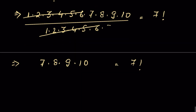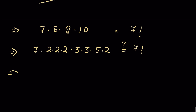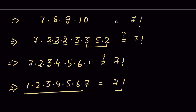Can 7 times 8 times 9 times 10 equal 7 factorial? Let's break it down: 8 as 2 times 2 times 2, 9 as 3 times 3, and 10 as 5 times 2. Regrouping: we get 4 from 2 times 2, then 2 times 4 gives us factors, 2 times 3 gives 6, and we have a 3, a 5, and a 7. Arranging as 1 times 2 times 3 times 4 times 5 times 6 times 7, this equals 7 factorial. So left-hand side equals right-hand side.